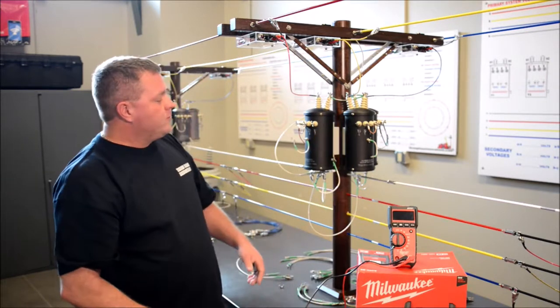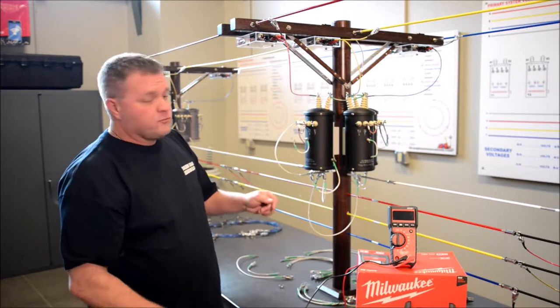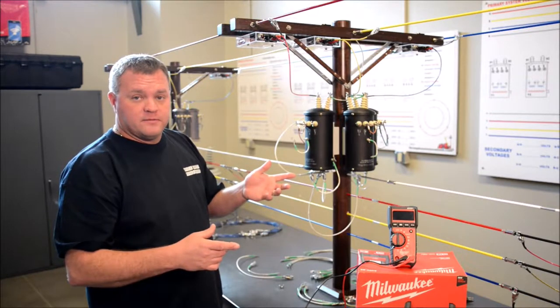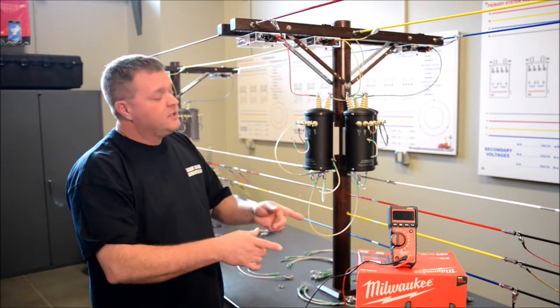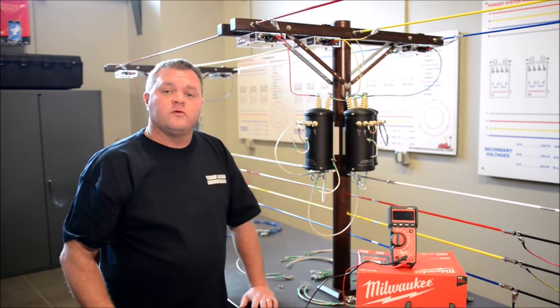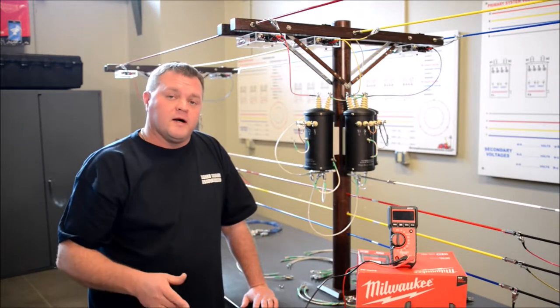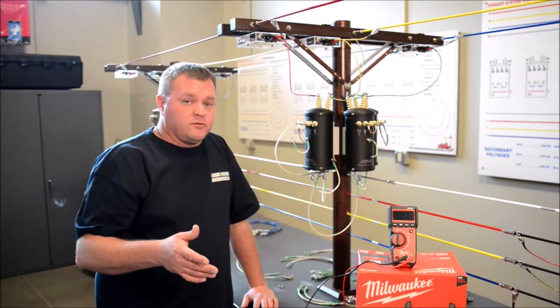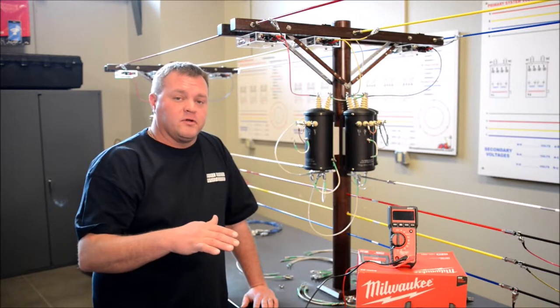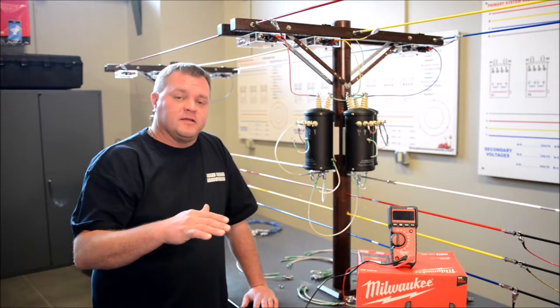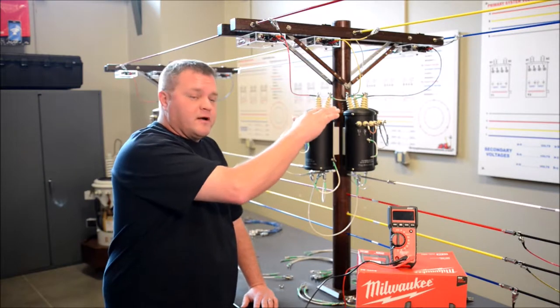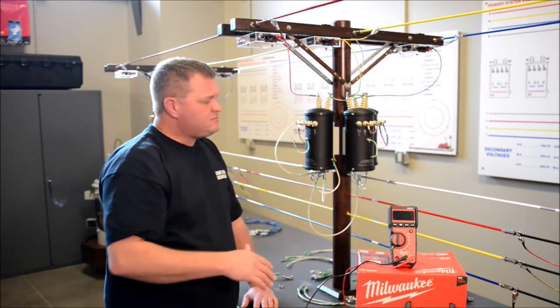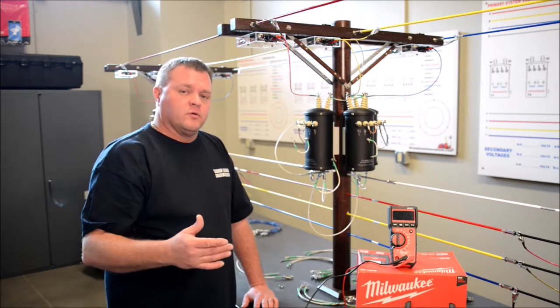So what we're going to do for this Y Delta bank is we're going to energize this here in just a second and check it with our voltmeter. Now at this test point it should be 40 volts or less for a Y Delta bank. Why is it 40 volts? There's a harmonic buildup between the Y and the Delta, meaning the Y primary and Delta secondary. If it's 40 volts or less we're good.